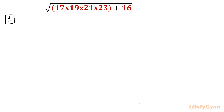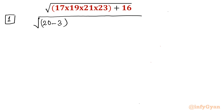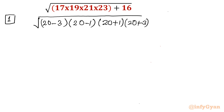Let me write the given square root as: I can consider 17 as 20 minus 3, 19 as 20 minus 1, 21 as 20 plus 1, and 23 as 20 plus 3, plus 16.